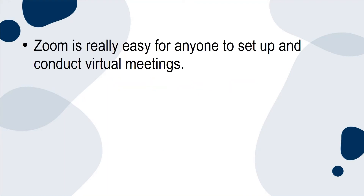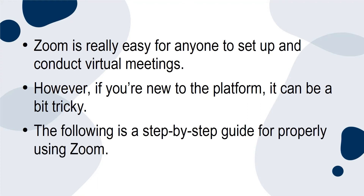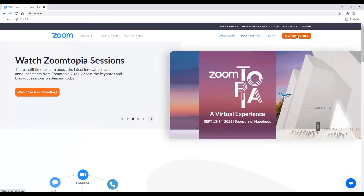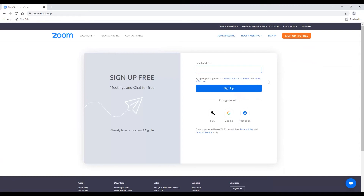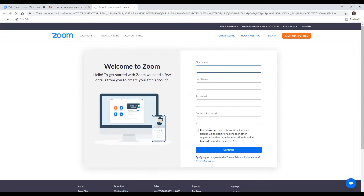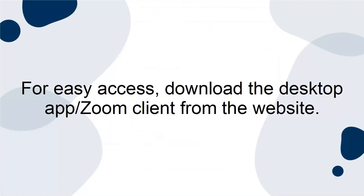How to use Zoom. Zoom is really easy for anyone to set up and conduct virtual meetings. However, if you're new to the platform, it can be a bit tricky. Here are the steps for getting started with Zoom on desktop: visit the website and click Sign Up in the upper right-hand corner. You'll be given two options — create an account using your work email or sign in with an SSO via Facebook or Google. If you plan to use Zoom for work, you may want to use your work email address. You'll be sent a confirmation link — click the link to be sent to Zoom's sign-up assistant. For easy access, download the desktop app from the website.